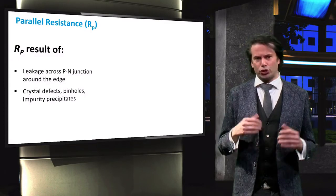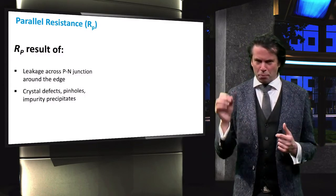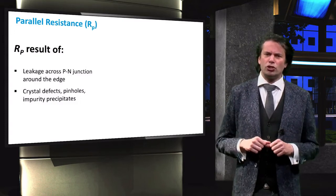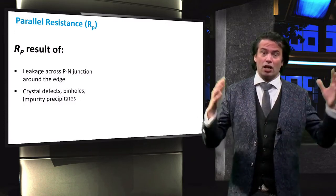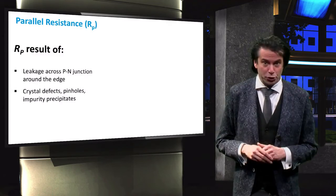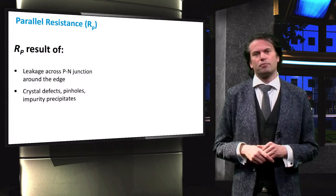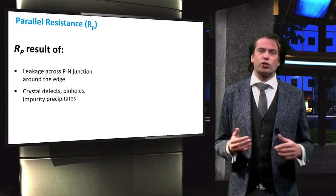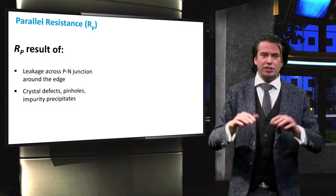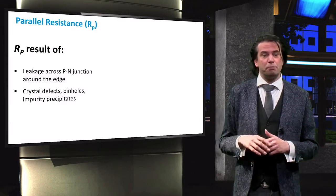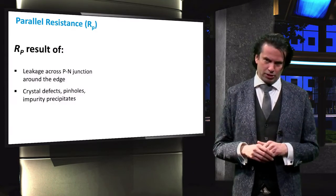Next we look at the shunt resistance. If you remember, this resistance is parallel to our load, so we actually want it to be as large as possible, otherwise it acts as a sink for the current that will reduce power to the load. A reduced shunt resistance is caused by leakages across the p-n junctions around the edges of the solar cell, or defects, pinholes and impurity precipitates in the semiconductor material.